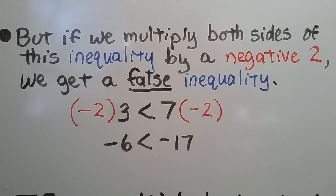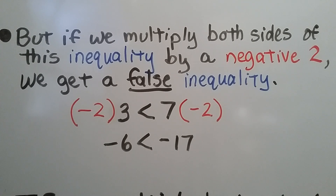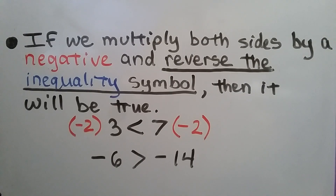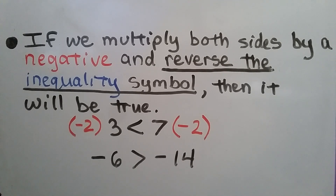But if we multiply both sides of this inequality by a negative 2, we get a false inequality: negative 6 is less than negative 17. That's not true — negative 6 is closer to 0, it's greater than negative 17. But if we multiply both sides by a negative and reverse the inequality symbol, then it will be true: negative 6 is greater than negative 14.